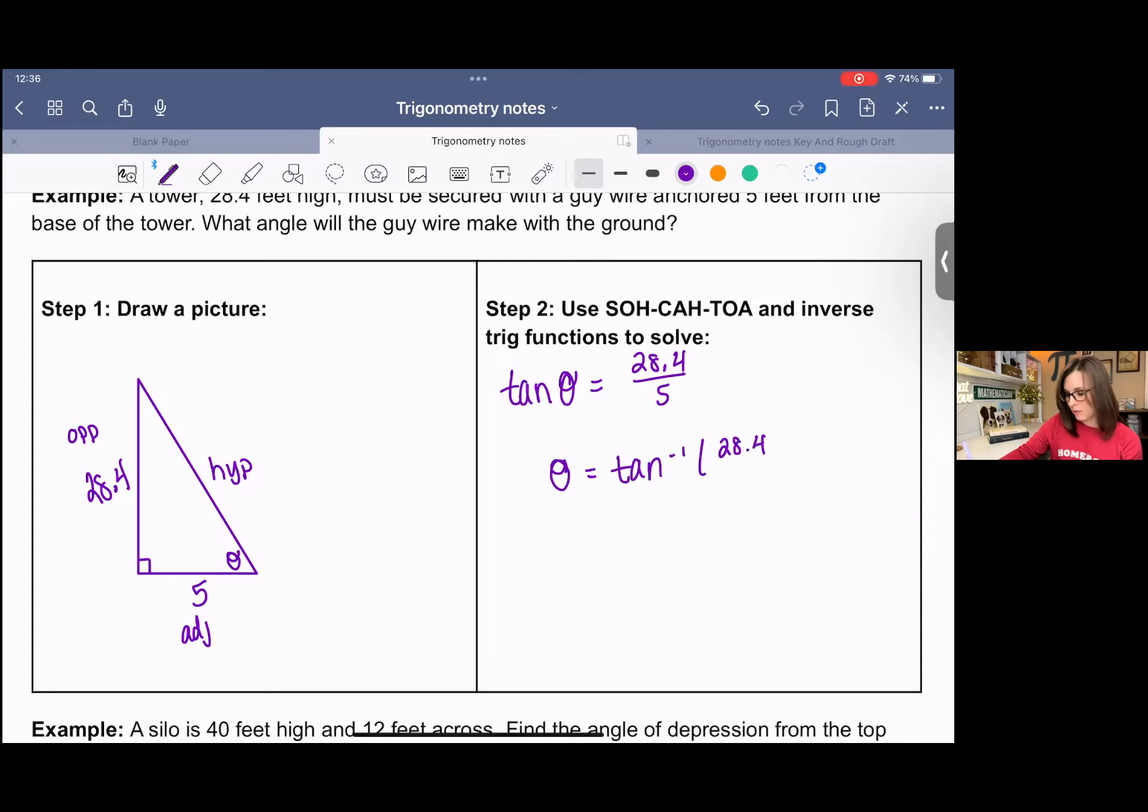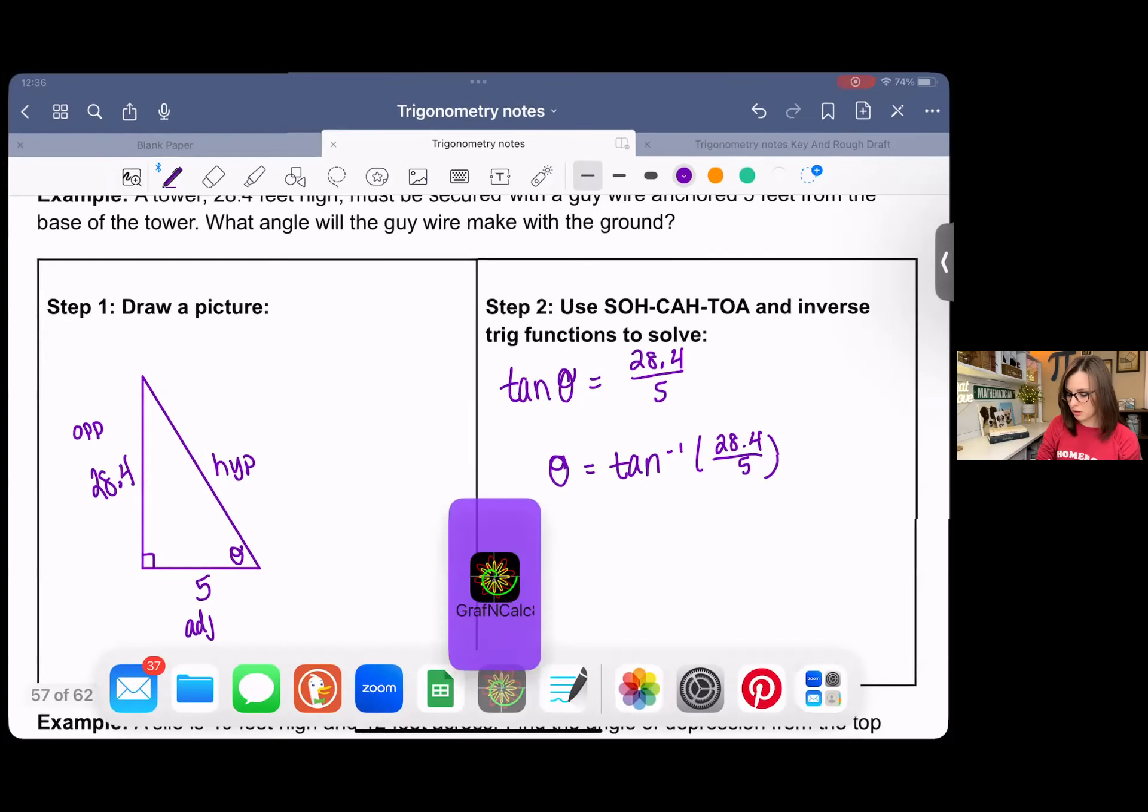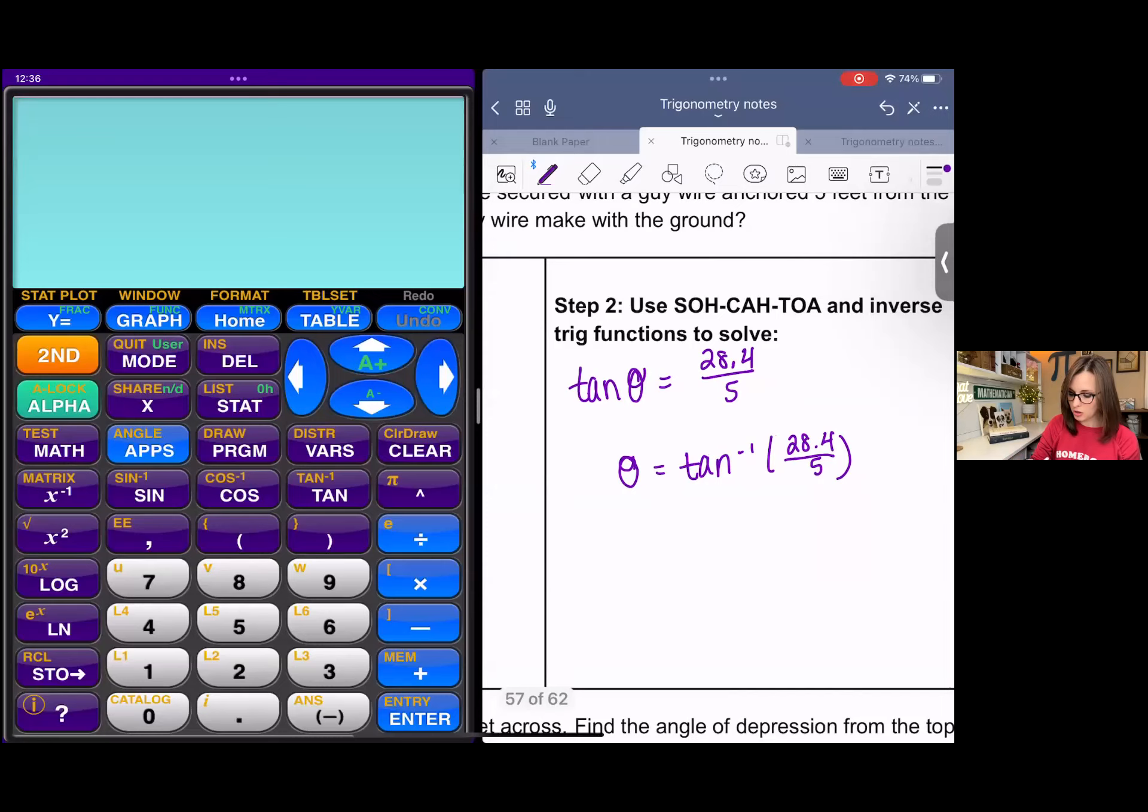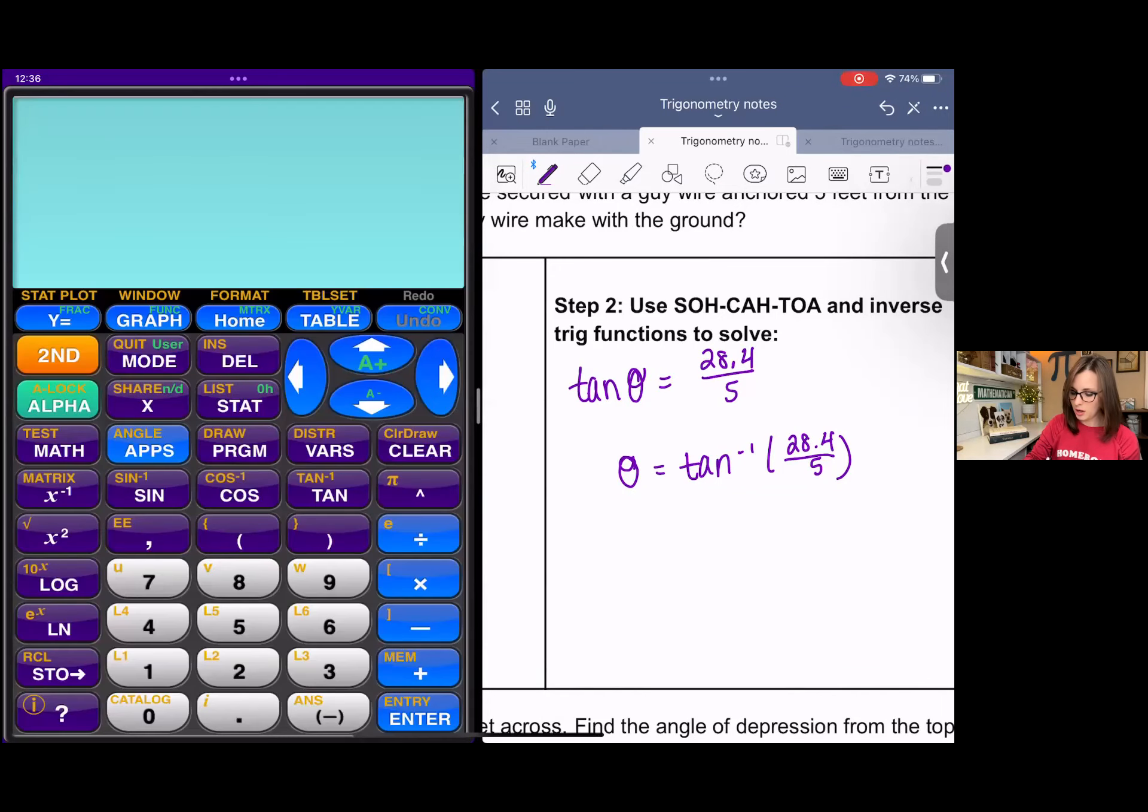And we have inverse tangent of 28.4 over 5. That would be an exact solution. And then if you're looking for an approximate solution, then you can use your calculator, put it in degree mode. Let's see, clear that, make sure it's in degrees. It wasn't. There we go. Inverse tangent, so second tangent of 28.4 over 5.